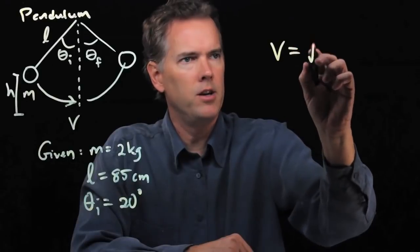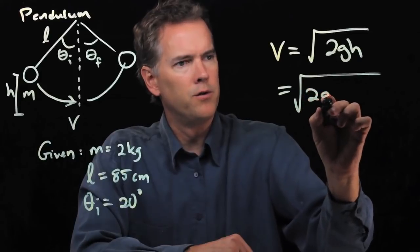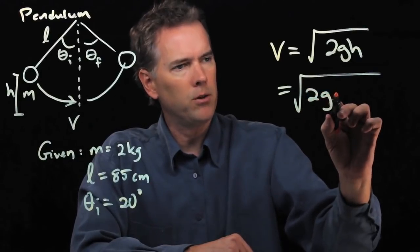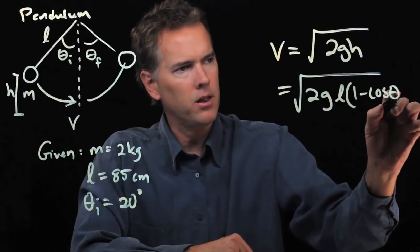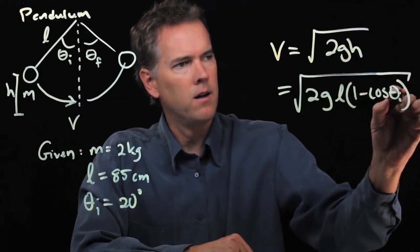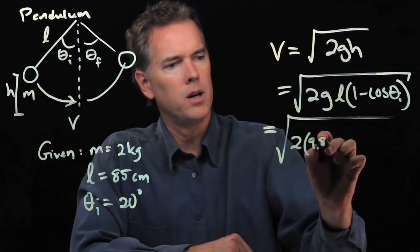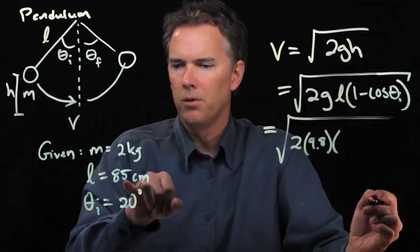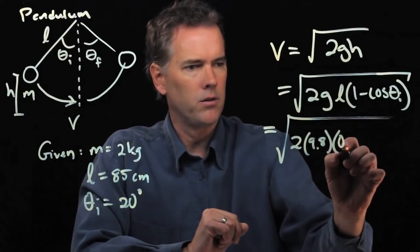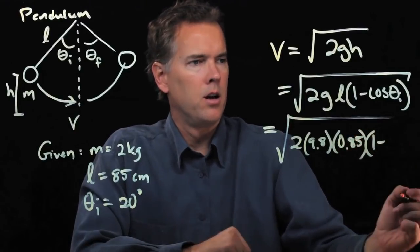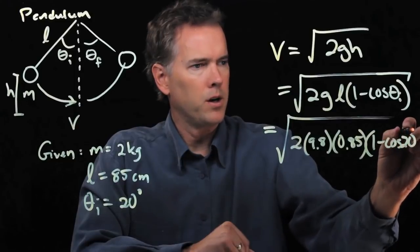We said v was square root of 2gh, which is square root of 2g times h, which we just said was l times 1 minus cosine theta i. And now we can plug in all those numbers: 2 times 9.8 times l, which we said was 85 centimeters, but we've got to put in SI units. So that's 0.85. And then we have 1 minus cosine of 20 degrees.